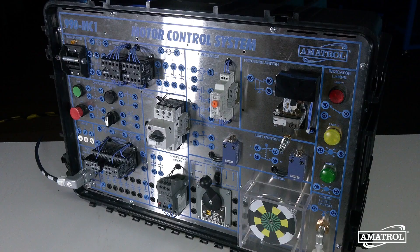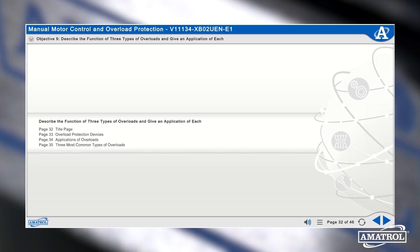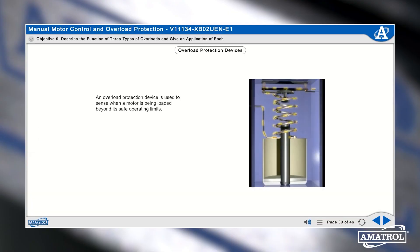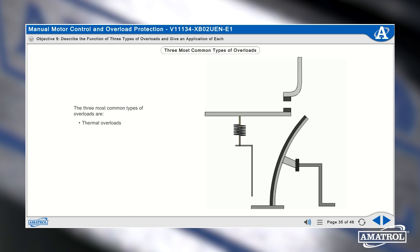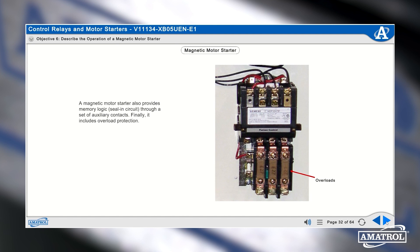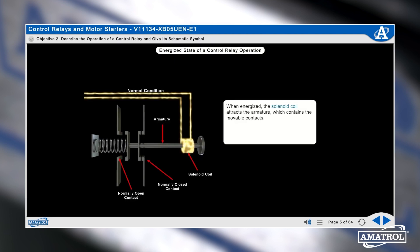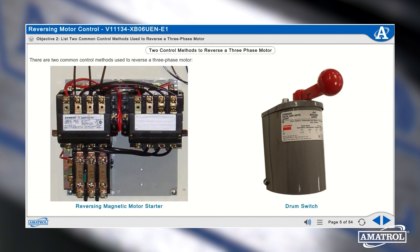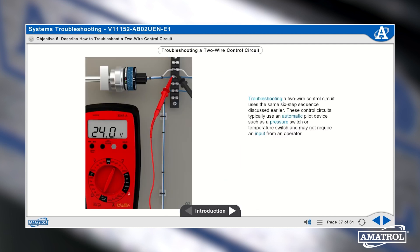Amitrol's portable electric motor control troubleshooting includes comprehensive e-learning curriculum, which covers essential motor control topics like manual motor control and overload protection, control ladder logic, motor starters, control transformers, control relays, reversing motor control, basic timer control, and system troubleshooting.